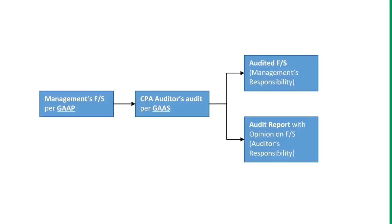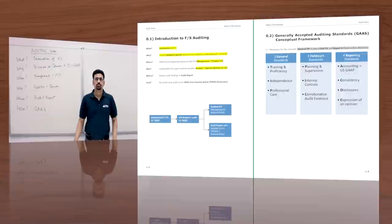Let's look at the chart on the bottom of this page. Management prepares financial statements per GAAP — Generally Accepted Accounting Principles. Then the auditor comes and does his audit per GAAS — Generally Accepted Auditing Standards. The result is audited financial statements, which are the responsibility of management, and the audit report with an opinion on the financial statements, which is the auditor's responsibility.